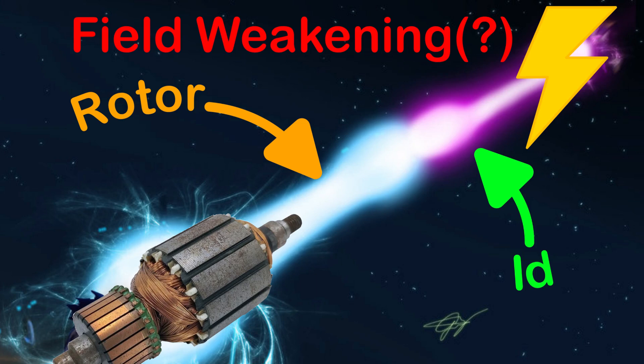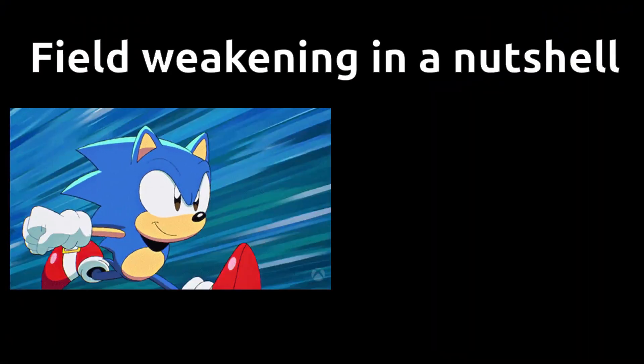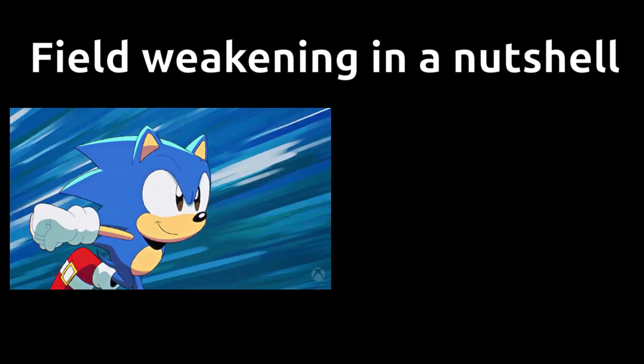So, what is field weakening? And how does it help motors spin faster? Short recap, field weakening is a technique used to achieve a higher speed at the expense of a lower torque.